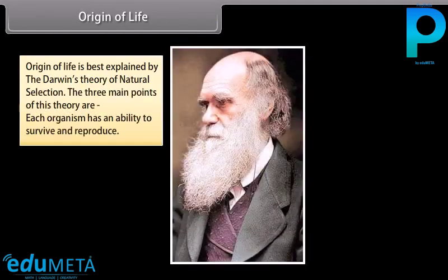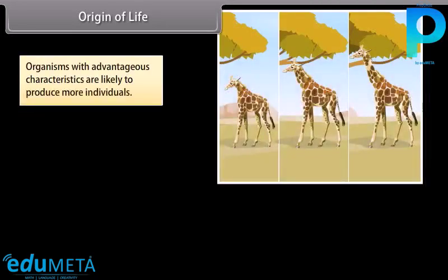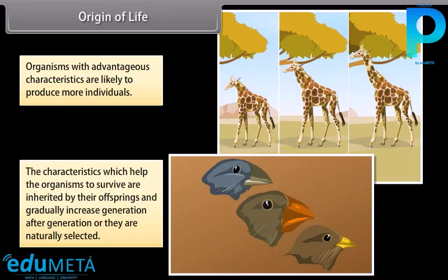Origin of life is best explained by Darwin's theory of natural selection. The three main points of this theory are: each organism has an ability to survive and reproduce; during reproduction, organisms show variations in many characteristics within their species; and organisms with advantageous characteristics are likely to produce more individuals. The characteristics which help organisms to survive are inherited by their offspring and gradually increase generation after generation — they are naturally selected.